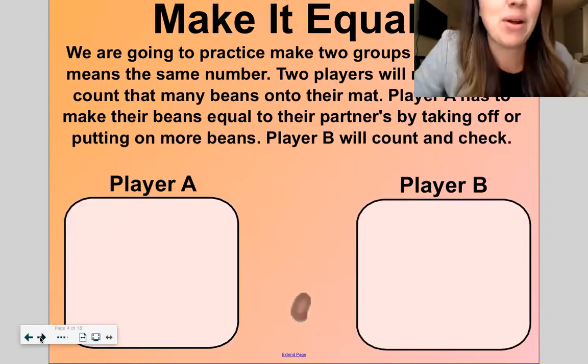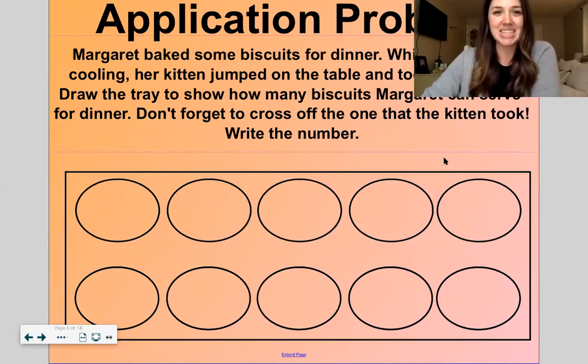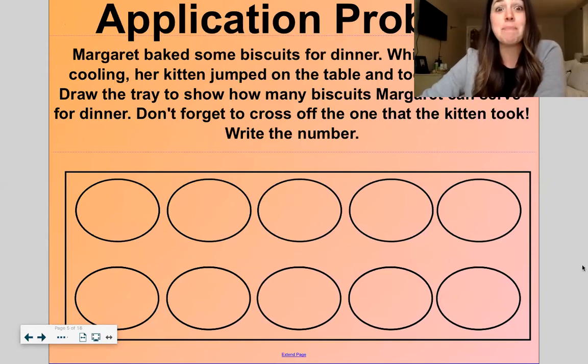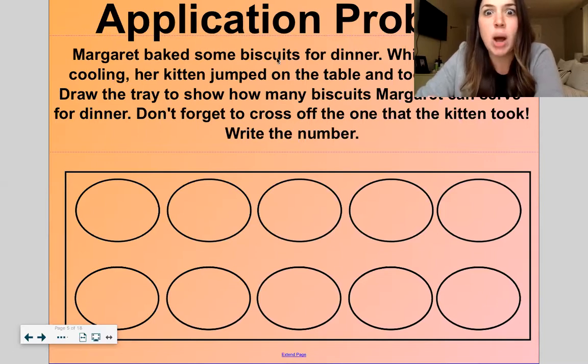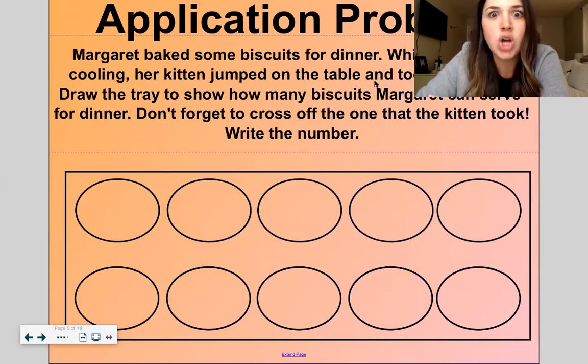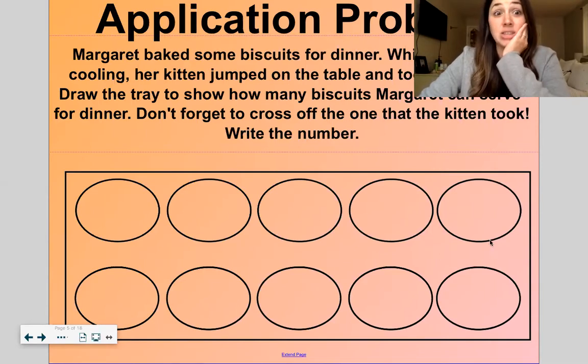All right, let's get into our application problem today which is about some biscuits. I like biscuits. Margaret baked biscuits for dinner. While they were cooling, her kitten jumped on the table and took one away, oh no. Draw the tray to show how many biscuits Margaret can serve for dinner. Don't forget to cross off the one that the kitten took.